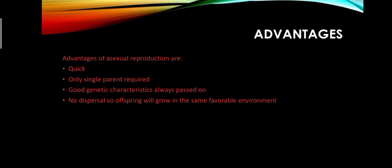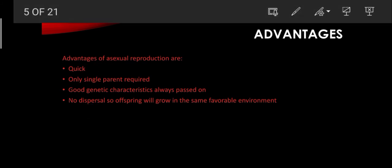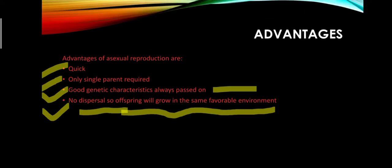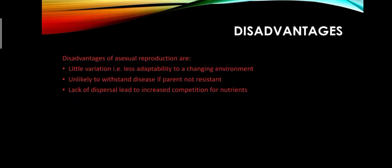The advantages of asexual reproduction are: first, it is quick; second, only a single parent is required; third, good genetic characteristics are passed on; and fourth, there is no dispersal, so offspring will grow in the same favorable environment.